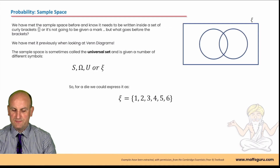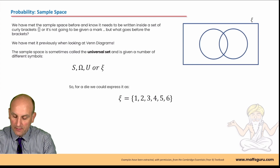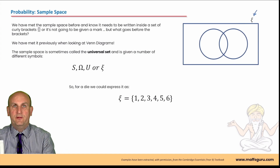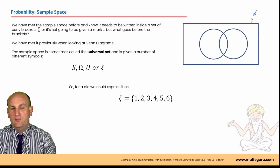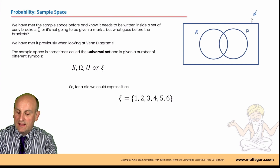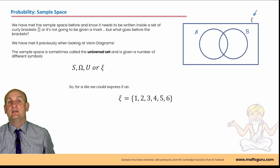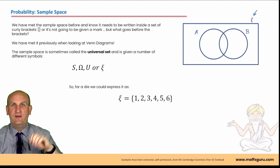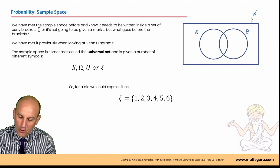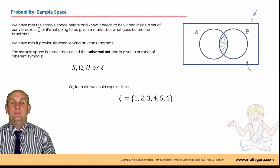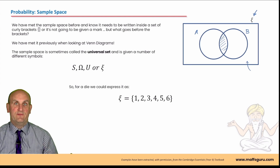Probability sample space: in the previous video I said that probably one of the most important things was that little epsilon sign at the top, and the reason being is that says that all of my numbers - all of my probabilities - are contained within that box. Generally speaking we had two events A and B, and then we had this overlap which was really really important.